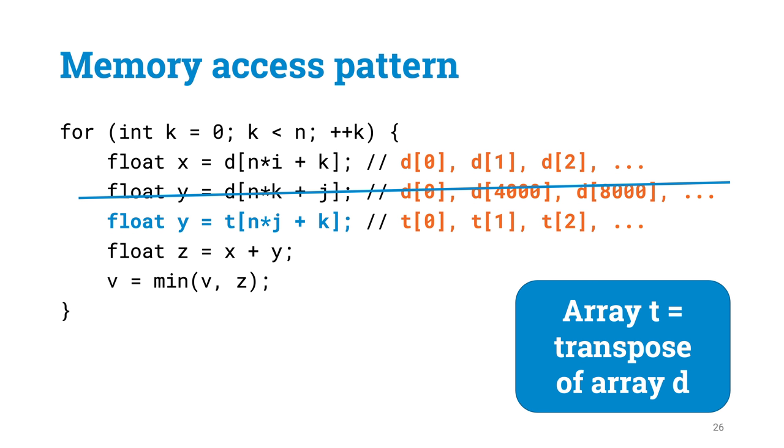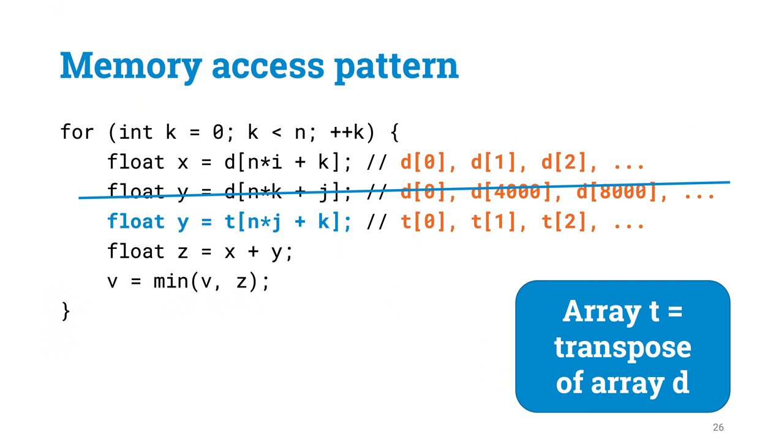What we can do in this case is to simply pre-compute an array T that simply contains the transpose of matrix D. Now d0 is simply t, d4000 is t, d8000 is t, and so on. So the memory axis pattern improves here dramatically. We are reading both d and t in a consecutive manner. So does the simple trick help anything? Let's benchmark.